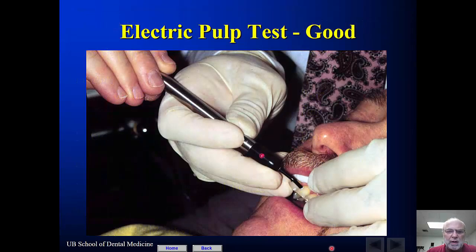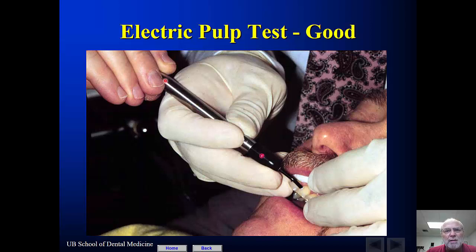The electric pulp test is good. Always remember that you, the operator, wear a glove — the patient just has to touch the end of it. As soon as the patient feels the slightest tingling on the tooth, you can assume the tooth is vital. Remember, though, you can have a false positive if you have suppurative fluid or pus in the canal. The suppurative fluid can transmit the electrical impulses from the EPT tip to the periodontal ligament space, giving a false positive. However, this tooth will feel different than adjacent teeth in that case, which is why it's always important to test more than one tooth when making an endodontic diagnosis.